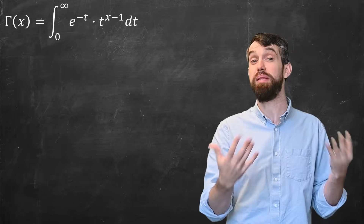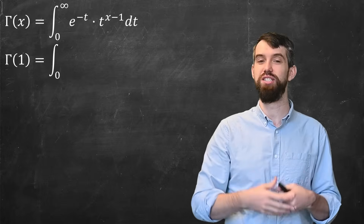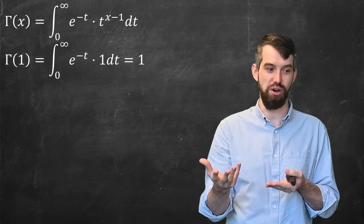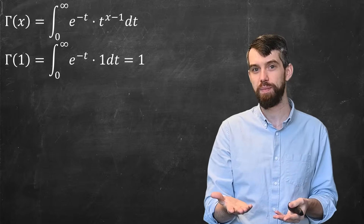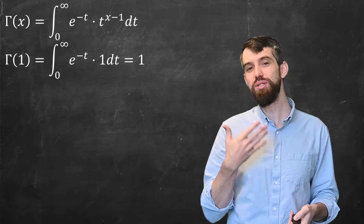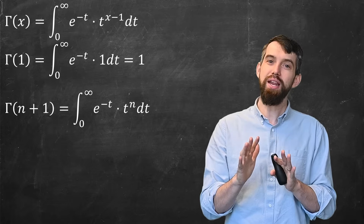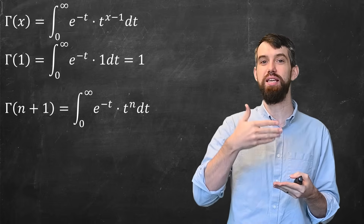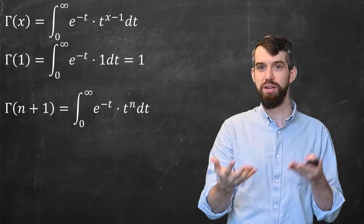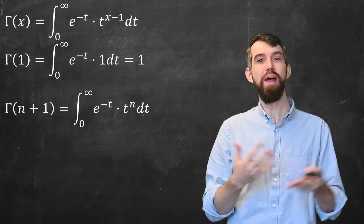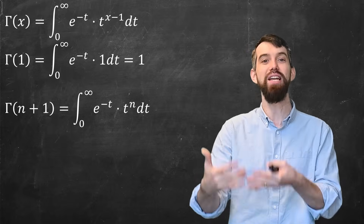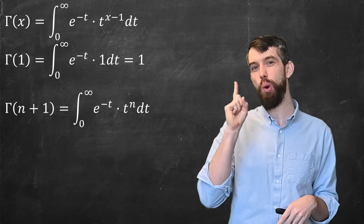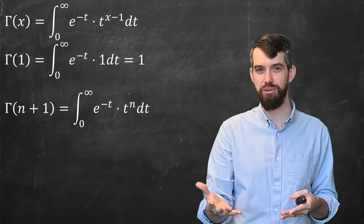The gamma function has many very pleasing properties. The first simple one is that the gamma function of 1 turns out to just be 1. If you plug in x = 1, you get t to the 0, which just becomes a negative exponential. You can integrate that and get 1. More interestingly, I want to see what happens to the gamma function when I evaluate it at an integer n plus 1. If I plug that in, t^(n+1−1) just becomes t^n. If you thought about how you might integrate this, you could do integration by parts n different times. But I'm only going to do it once to get some recursive behavior.